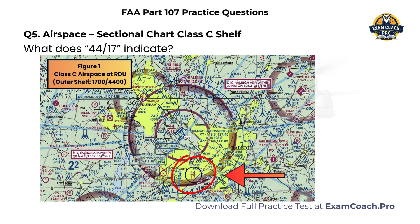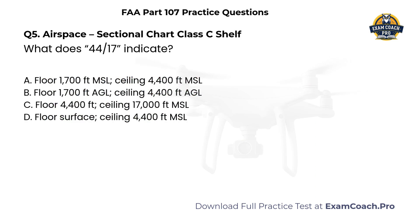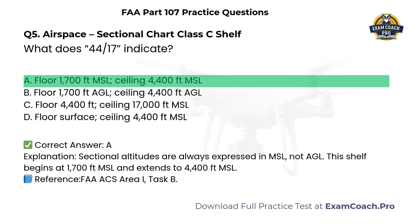Airspace. Sectional chart Class C shelf. Refer to Figure 1. What does 44 over 17 indicate? A. Floor 1,700 feet MSL, ceiling 4,400 feet MSL. B. Floor 1,700 feet AGL, ceiling 4,400 feet AGL. C. Floor 4,400 feet, ceiling 17,000 feet MSL. D. Floor surface, ceiling 4,400 feet MSL. Correct answer: A. Sectional altitudes are always expressed in MSL, not AGL. This shelf begins at 1,700 feet MSL and extends to 4,400 feet MSL.